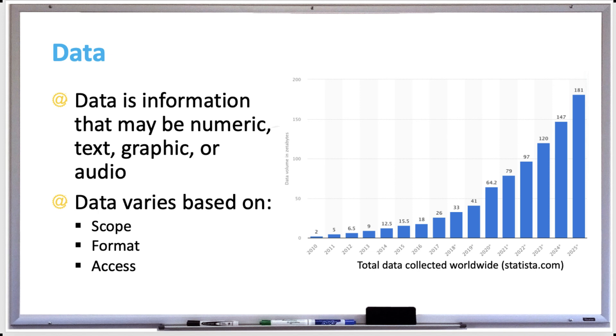Data varies based on several factors. There's scope, which is the amount of data produced and collected. For example, a small company might track an inventory of a few thousand items, but a large company like Amazon may track millions or even billions of items.